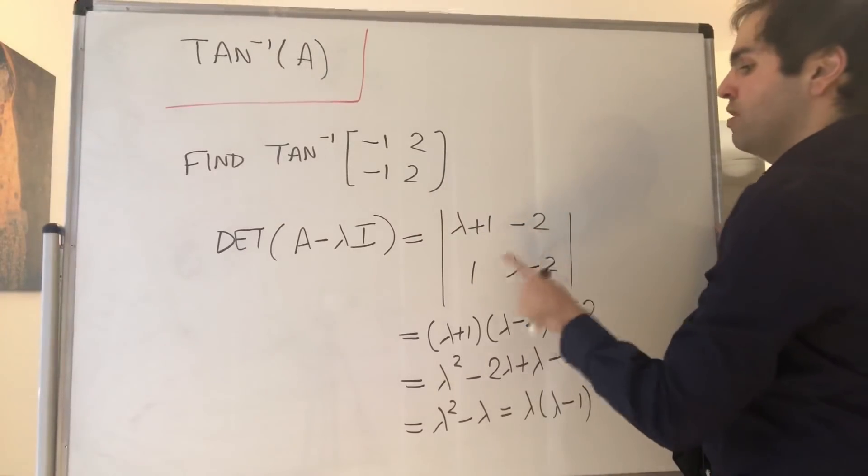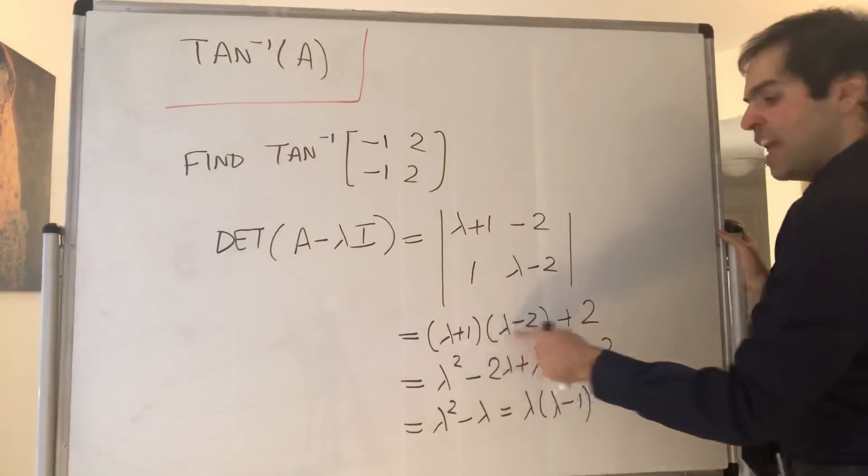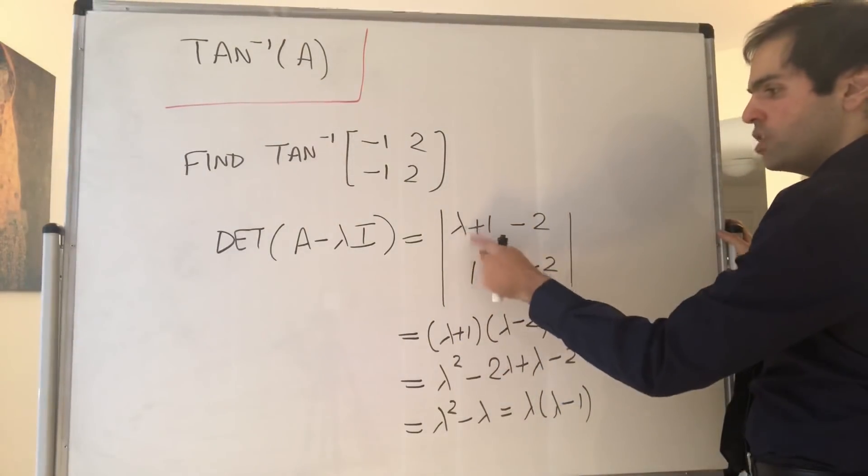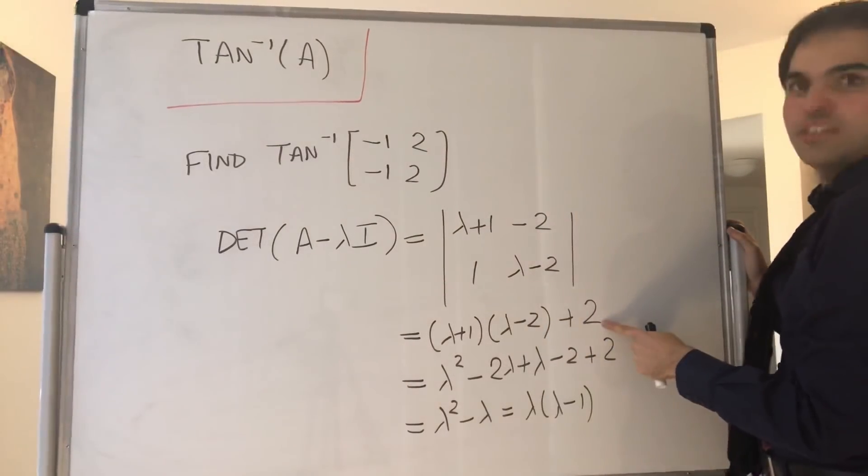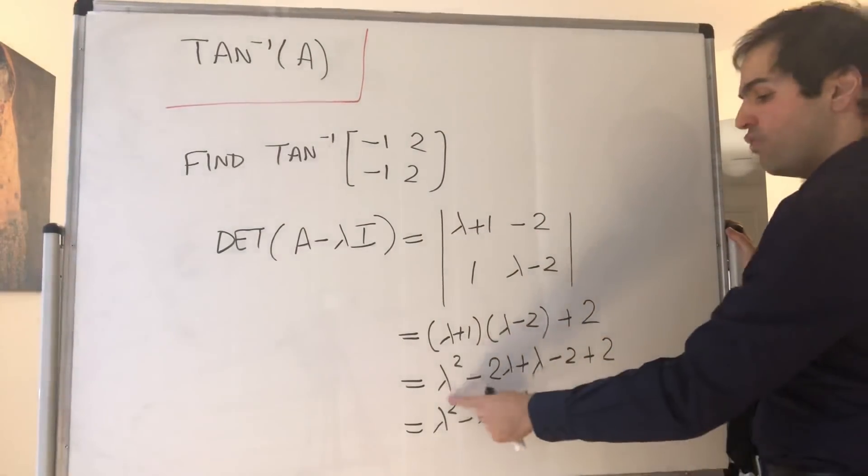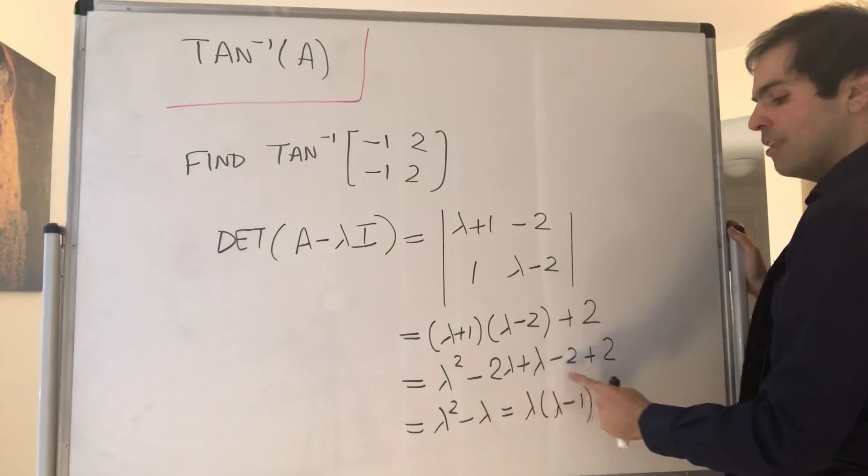So lambda plus 1, minus 2, 1, lambda minus 2. You calculate the determinant - AD minus BC - which becomes this times this, and then minus minus 2, which is plus 2. And then you fold this out, so lambda squared minus 2 lambda plus lambda minus 2.